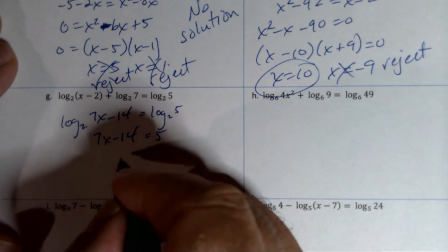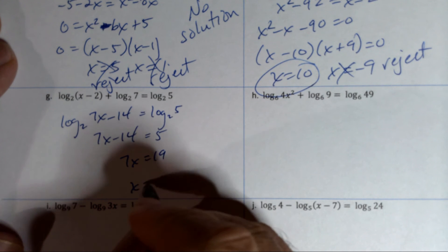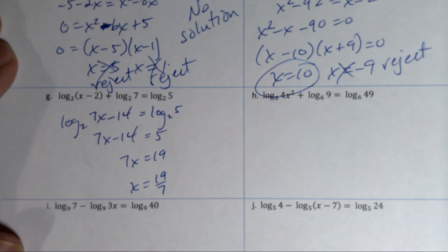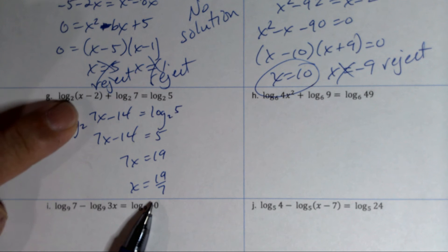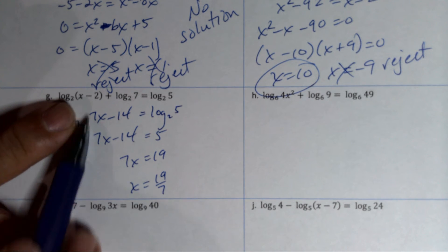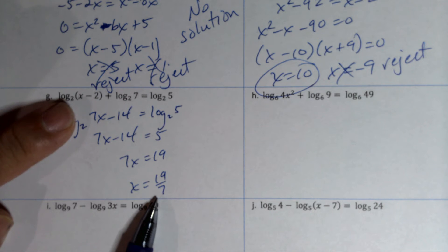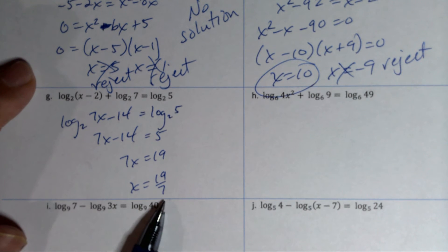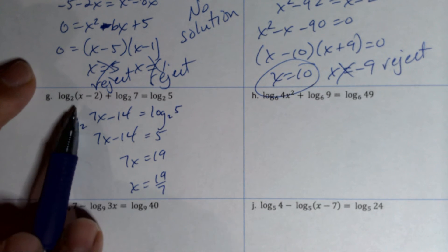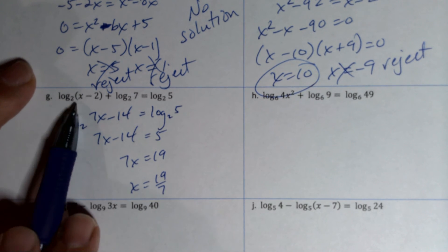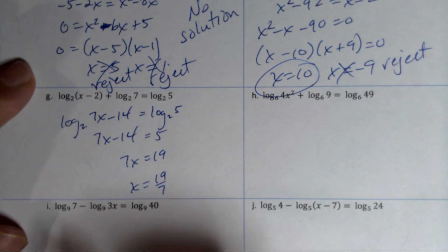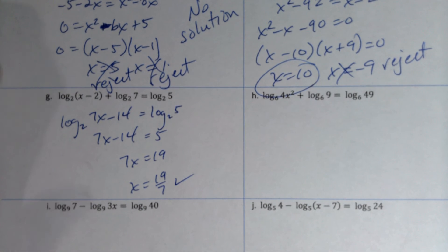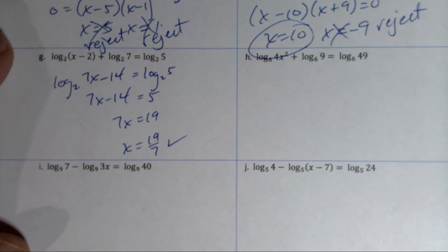After dropping the logs: 7x − 14 = 5. Adding 14 to both sides gives 7x = 19, so x = 19/7. Checking: 19/7 is bigger than 2, so 19/7 minus 2 is a positive number. That's all we need — the argument must be positive and not zero.